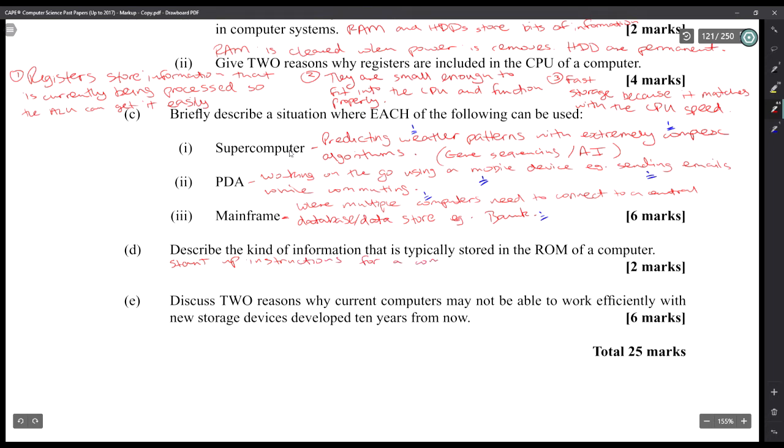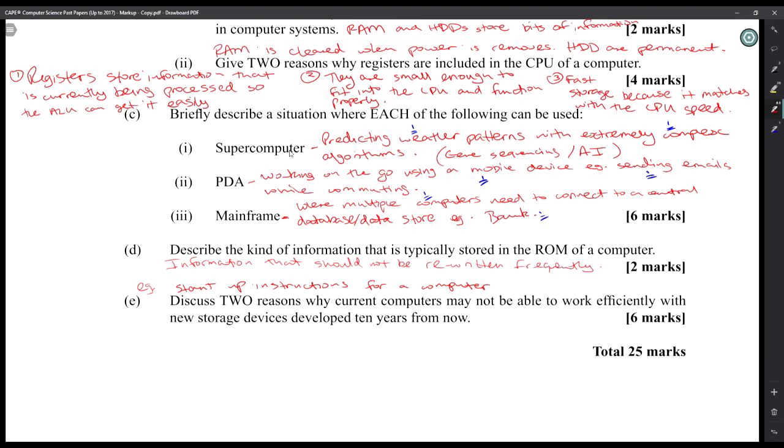Part D: describe the kind of information that's typically stored in the ROM of a computer. Information that's typically stored in the ROM of a computer would be startup instructions for the computer. ROM usually stores information that should not be rewritten frequently or should be permanent - example: startup instructions for a computer. That'll give you a good two-mark answer there.